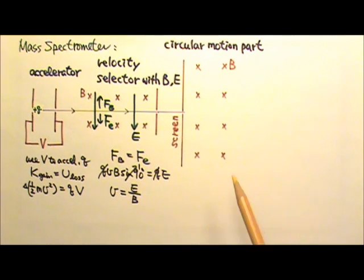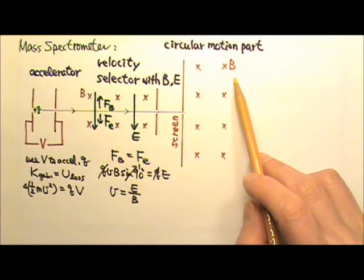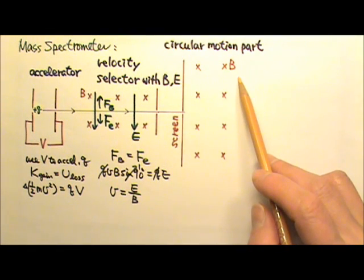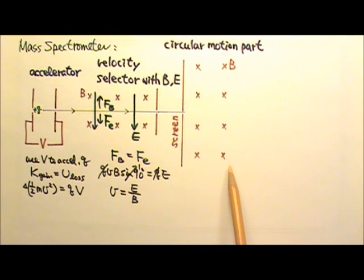The third part here is a region with only a uniform magnetic field. This time there is no electric force to cancel the magnetic force, so the positive q does a circular motion. See if you can draw the path of the positive q inside this magnetic field.